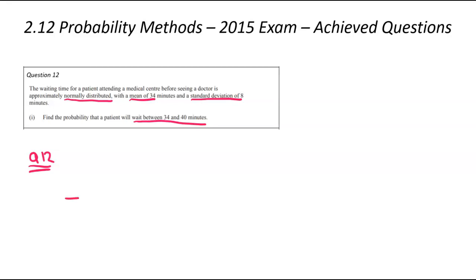As always for this type of question, I've got to draw my graph. It just helps me avoid little mistakes. I've got a mean of 34 down here and a standard deviation of 8. I'm interested in the range between 34 and 40. Once I've got that diagram, I can start thinking about my calculator and what my inputs are going to be.